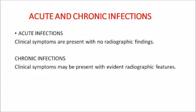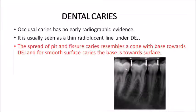In bitewing radiographs, occlusal pit caries of the enamel appear as a triangular radiolucent area with the base towards the dentinoenamel junction (DEJ). You can appreciate this in the upper second premolar — a triangular radiolucent area with the base towards the DEJ.